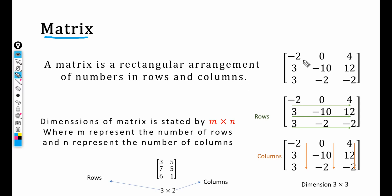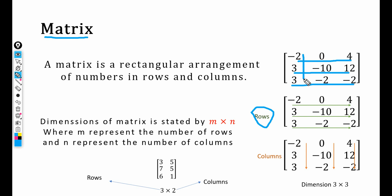For example, we have these numbers arranged in rows — these horizontal lines: 3, minus 10, 12, 3, minus 2, minus 2 — are known as rows, while these vertical lines, going from top to bottom through each column, represent the columns. So a matrix is a rectangular arrangement of numbers in rows and columns inside brackets.